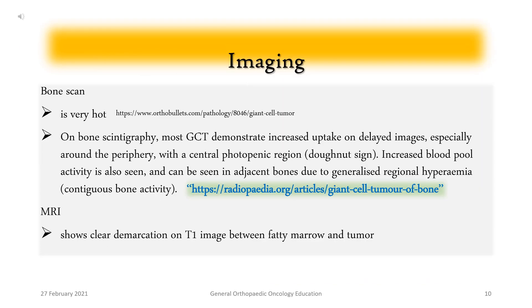Bone scan: GCT appears as a hot lesion. On bone scintigraphy, most GCTs demonstrate increased uptake on delayed images, especially around the periphery, with a central photopenic region — the 'donut sign.' Increased blood pool activity is also seen, and can be seen in adjacent bones due to generalized regional hyperemia, referred to as contiguous bone activity.